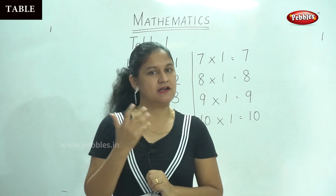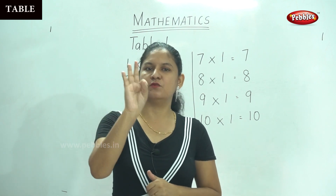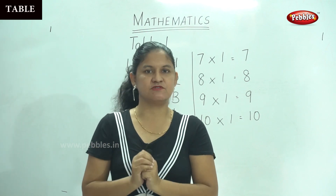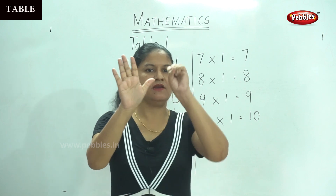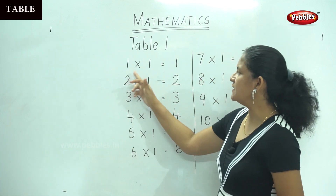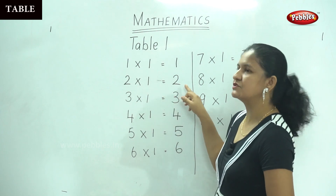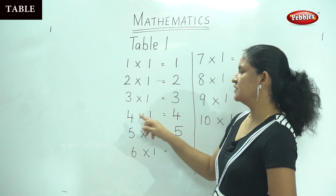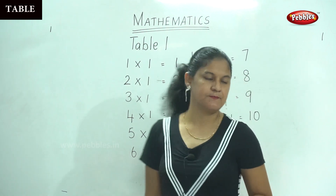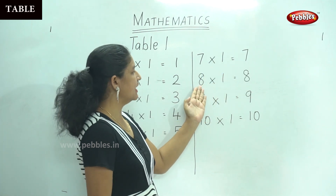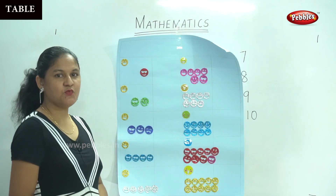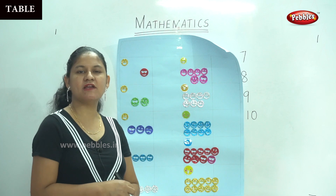8 times 1 gives you 8. 9 times 1 gives you 9. And 10 times 1 — counting ten 1s — gives you 10. Now let's review: 1 times 1 gives you 1, 2 times 1 gives you 2, 3 times 1 gives you 3, 4 times 1 gives you 4, 5 times 1 gives you 5, 6 times 1 gives you 6, 7 times 1 gives you 7, 8 times 1 gives you 8, 9 times 1 gives you 9, and 10 times 1 gives you 10. Now we have a small activity for you to understand the 1 times table better.